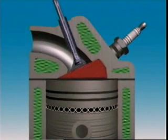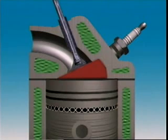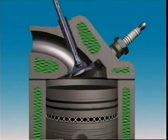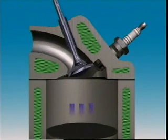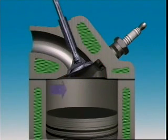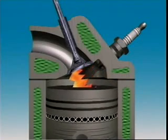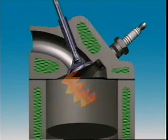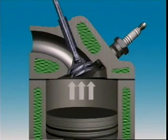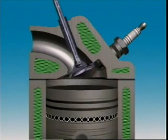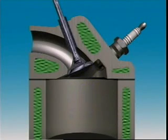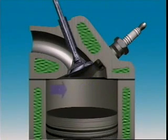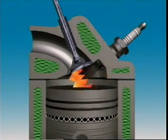The wedge shaped combustion chamber tapers away from the plug, which is at the thick end of the wedge. The valves are in line and inclined from the vertical. This design usually has a smaller surface area than the others, with less area where fuel droplets can condense. Less fuel is left unburned after combustion, which reduces hydrocarbon exhaust emissions. And since the flame is directed towards the small end of the wedge, damage caused by detonation is reduced.